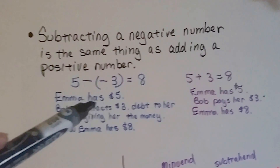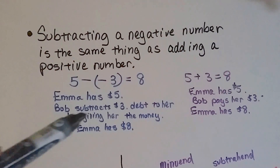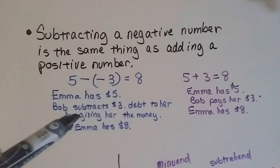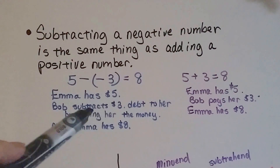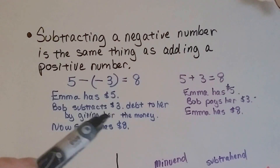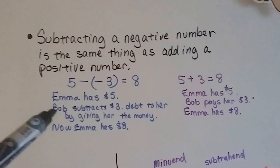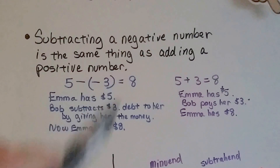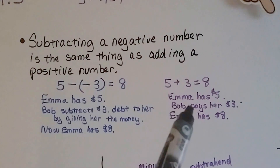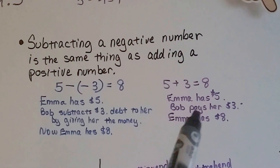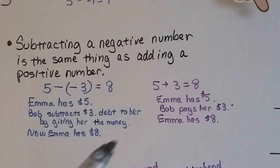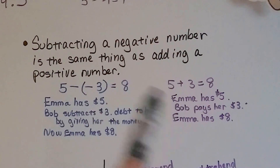It's like Emma has $5 and Bob subtracts a $3 debt he has to her. The only way to subtract a $3 debt is by paying her. So now Emma has $8. It's the same thing as Emma has $5 and Bob pays her $3 — she has $8. Same thing.